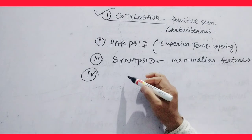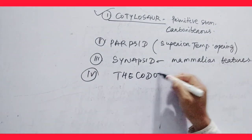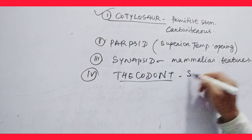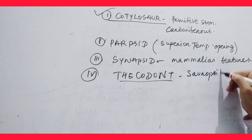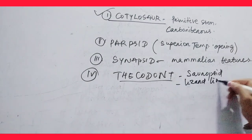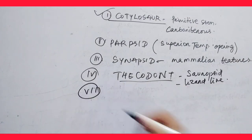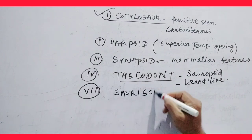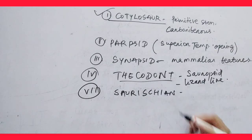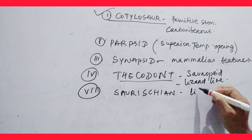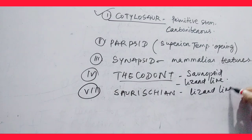Next are Thecodonts. Thecodonts developed from Saurosid ancestors — Saurosid. These are lizard-like. Then Saurischians — these are also lizard-like.